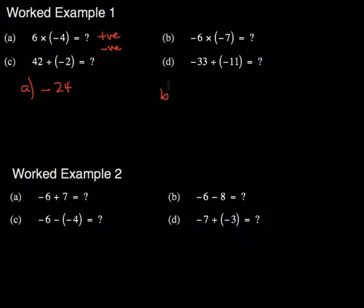For B, I have two negatives, which would make it positive. So then 6 times 7 would be my answer.